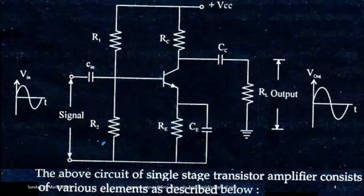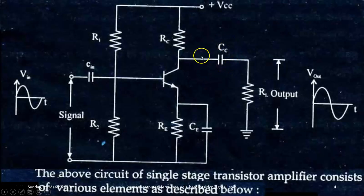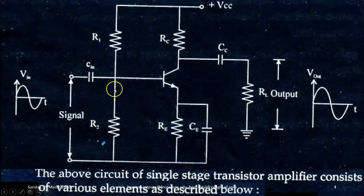Single stage transistor amplifier. This diagram shows the circuit of single stage transistor amplifier and it consists of various elements. Firstly, it's a transistor — in the figure, you will see this is an NPN transistor. Then R1, R2, Rc and Re, they form the voltage divider biasing network. CIN is the input coupling capacitor. CC is the output coupling capacitor. RL is the load resistance across which the output is taken. VCC is the supply given to establish the biasing in the circuit. VIN is the input signal, sinusoidal, and VOUT is the output signal which is in amplified form.